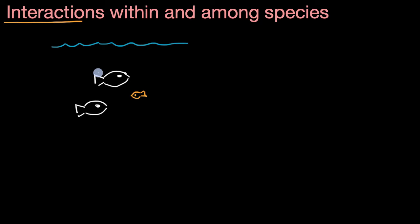For example, let's say this white species right over here likes to eat this yellow species for food. That is an interaction. It will try to predate, to eat that yellow species. That type of interaction between species, we call interspecific interactions.